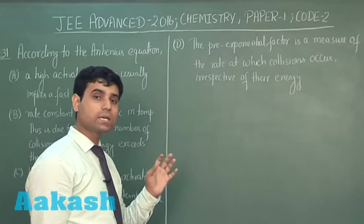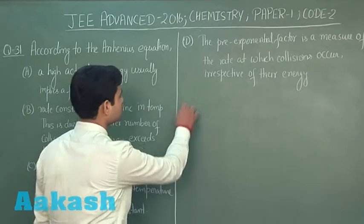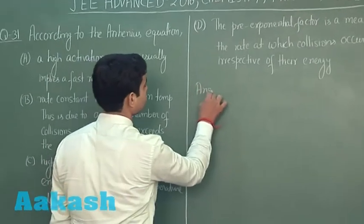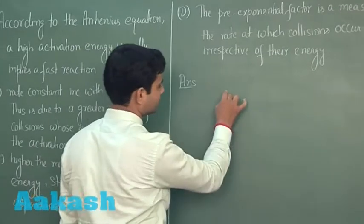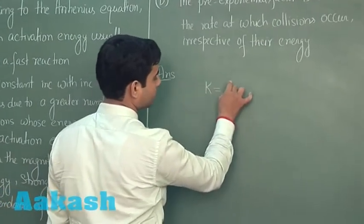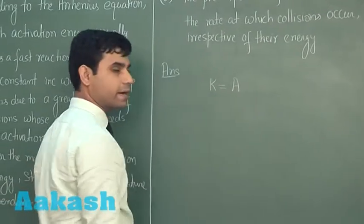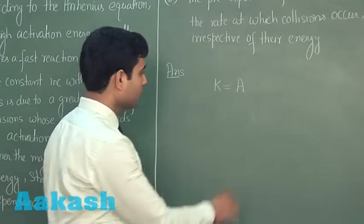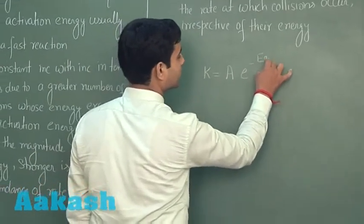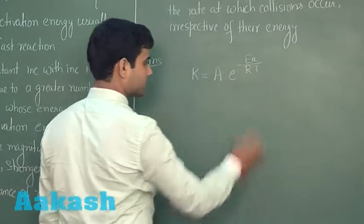Let us write the Arrhenius equation. According to the Arrhenius equation, the rate constant k equals the pre-exponential factor A multiplied by e to the power of minus Ea upon RT, where Ea is the activation energy.